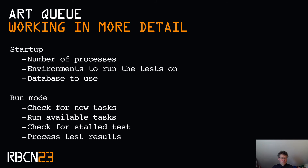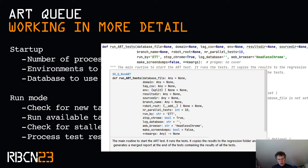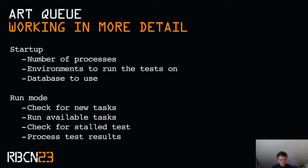We are now at the second part — the working of the RTQ in more detail. When we start the RTQ, we tell it how many processes it can use, in which environments it needs to run its tests, and which database to use. More options are available, like making screen dumps, which web browser to use, which folders to use, and so on. In run mode, it checks for new tasks in the database, runs those available tasks against the environment it needs to, checks for stalled tests — we'll come to that later — and processes the test results so we can see them in Grafana.